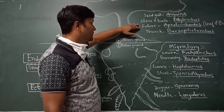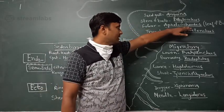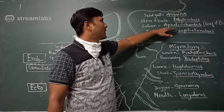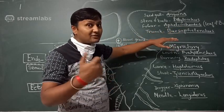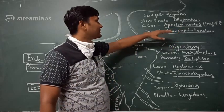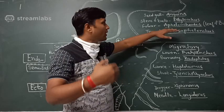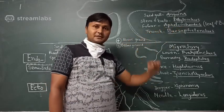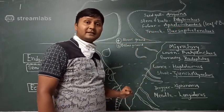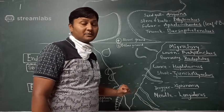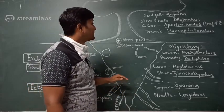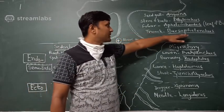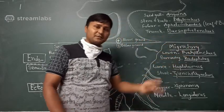Another above ground nematode is the foliar nematode Aphelenchoides, also known as leaf and bud nematode. It causes white tip disease of rice, feeding on the leaves of the rice crop. It also causes leaf spot disease in strawberry.